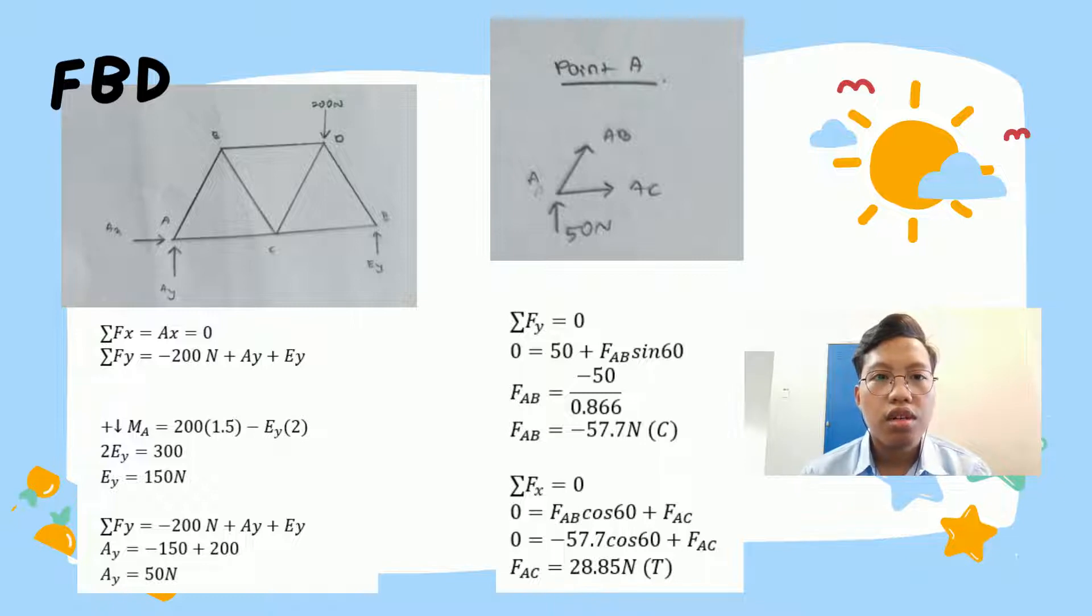So we want to get the value of EY. We need to take moments about point A. Moment equals force times distance. So we have 200 N times 1.5 meters, subtract EY times 2 meters equals zero. When we calculate, EY equals 150 N. Then we substitute EY into the sum of FY equation. Sum of FY equals negative 200 N plus AY plus 150 N. From this equation, we get AY equals 50 N.